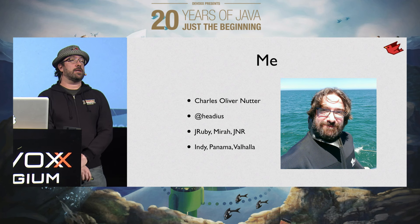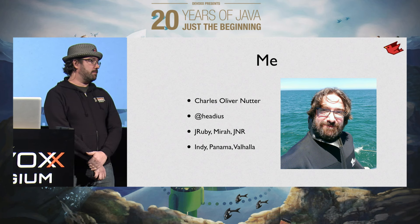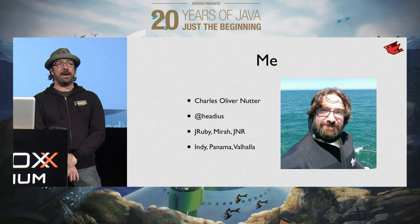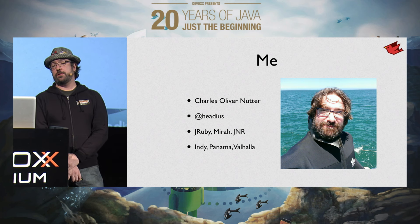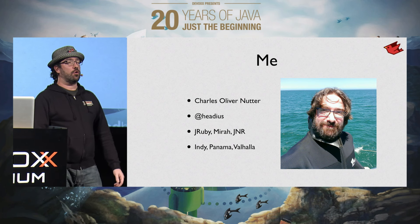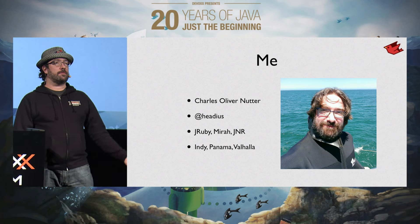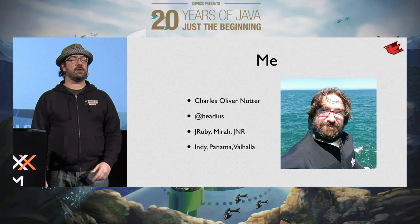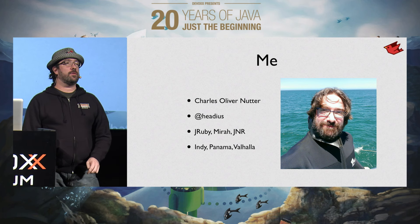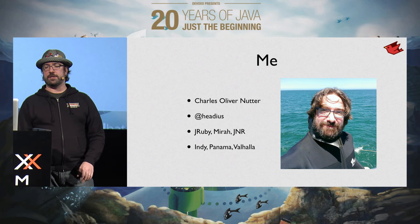I've also been involved in a lot of OpenJDK-level stuff — one of the folks helping the invokedynamic JSR get through, helping make sure it was designed well for languages like JRuby. Project Panama, one of the new possibilities for Java 10, is going to be native calls built into the JVM — similar to P/Invoke on .NET or FFI in Ruby. And most recently, starting to get involved in Project Valhalla, which is about value types and generic specialization, really cool stuff coming in hopefully Java 10 or so.